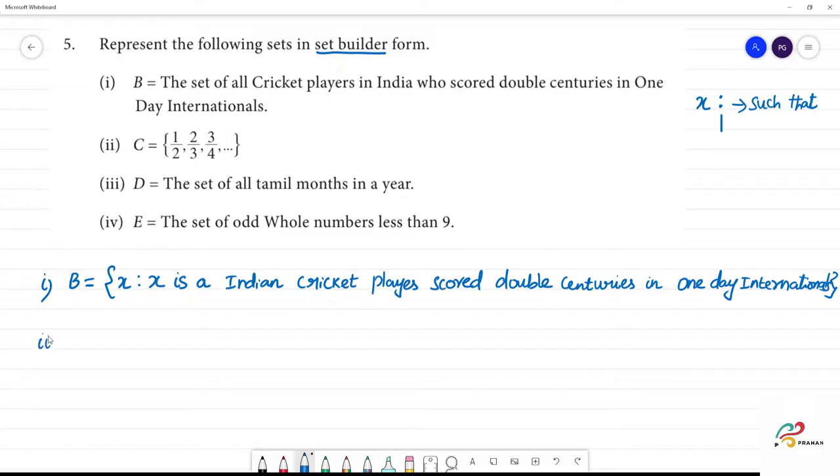Next one, second one. What is the set builder form? C is equal to 1 by 2, that is 2 by 3, 3 by 4, etc. So if you look at the numbers 1, 2, 3 in the numerator, there is a natural number. Then in the denominator, there is a difference. So 1 plus 1 is 2, so these are natural numbers.